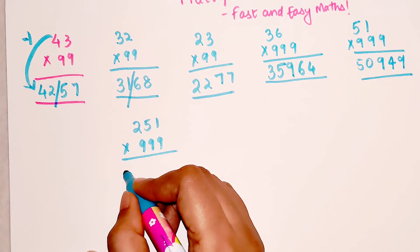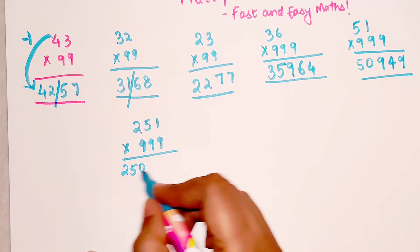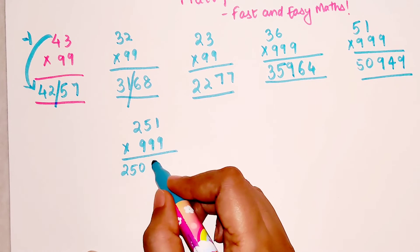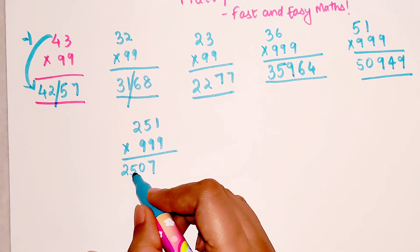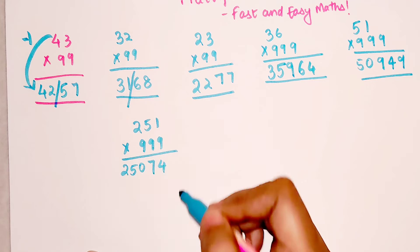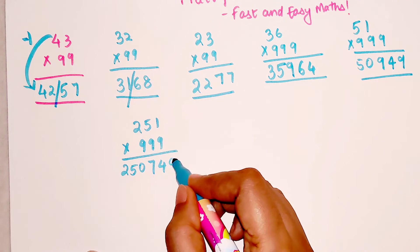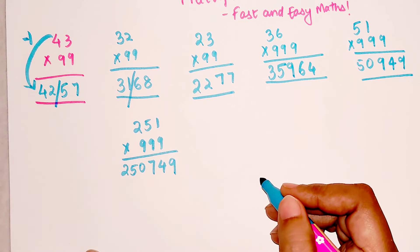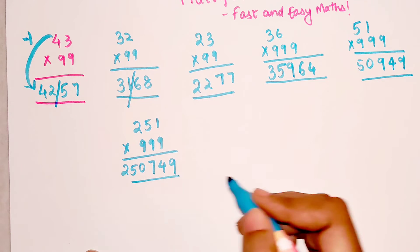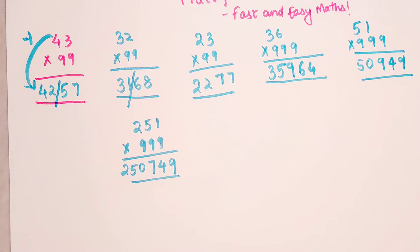So now, 251 minus 1 is getting you 250, and then you should add what to 2 to get 9? 7. What to 5? 4 to get a 9. And what to 0? 9 to get a 9. I hope you are getting what I am trying to do.